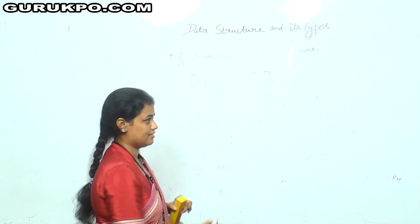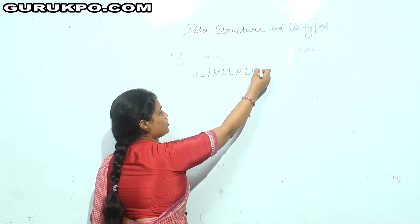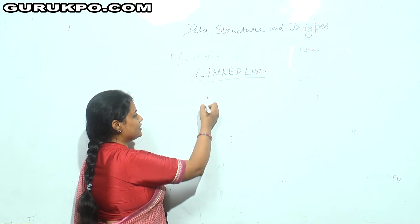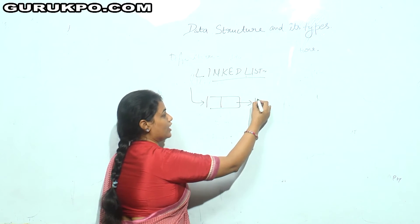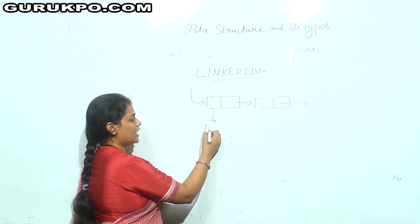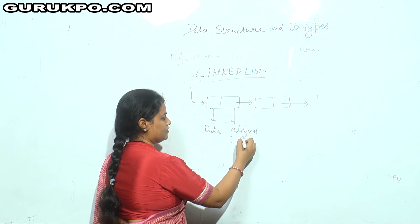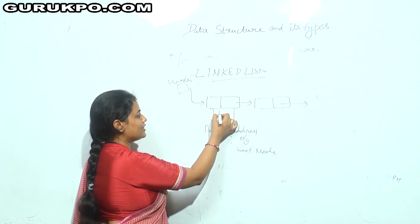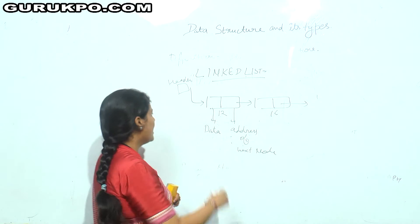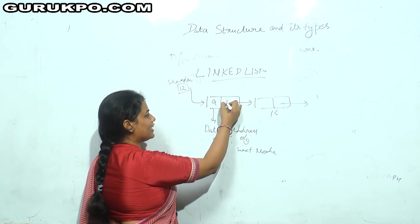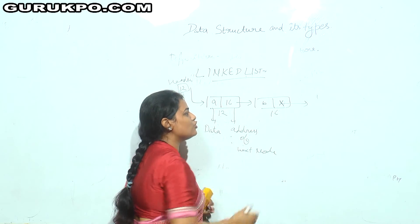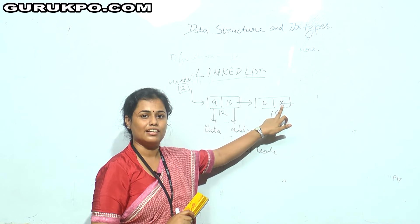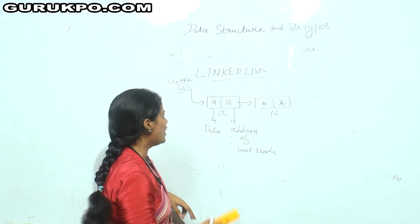The next linear data structure is linked list. A linked list is a data structure in which data is stored in a linear fashion, but we can insert or delete data from the middle very easily. In a linked list, each node has two fields: one field contains the data and the other contains the address of the next node. A header is also included, which contains the address of the first node. Suppose the address of the first node is 12 and the next is 16 — the node will contain address 12, data A, then address 16, and so on. The last node of the linked list contains null, indicating it is the last node.